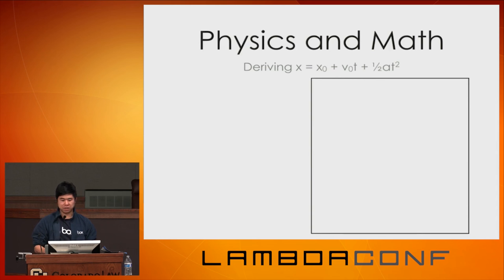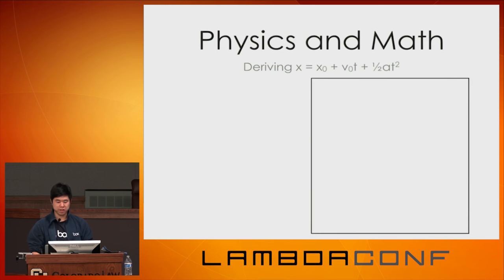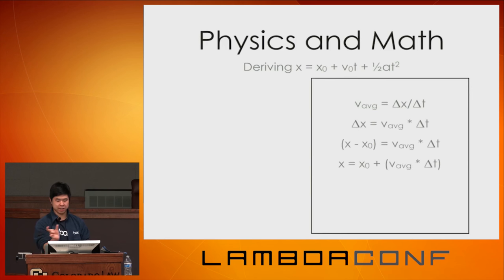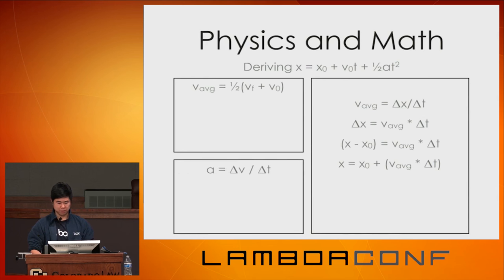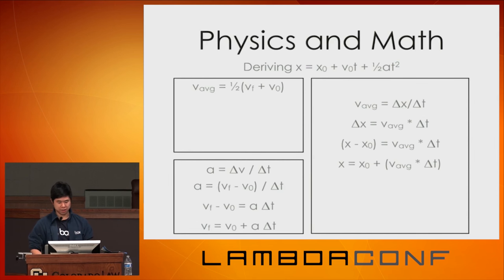As an example, we derive the equation that gives the position of an object given its initial position, initial velocity, and acceleration. We start with average velocity — change in position over change in time — do some algebraic manipulation, isolate x, and express it using average velocity. Average velocity is half of final plus initial velocity. We don't know final velocity yet, so we use acceleration: change in velocity over change in time. After some manipulation, we derive one of the laws of motion from a simple first principle.